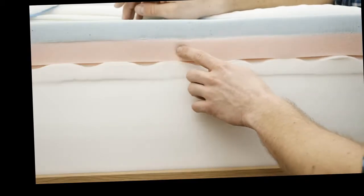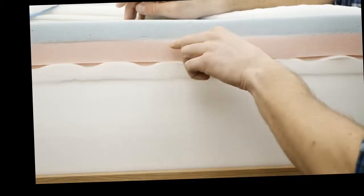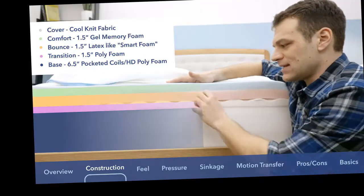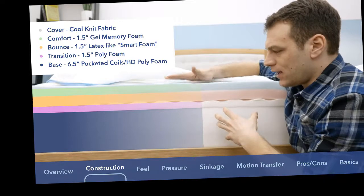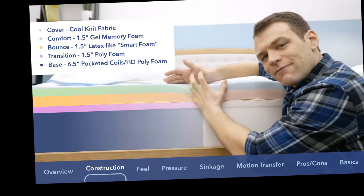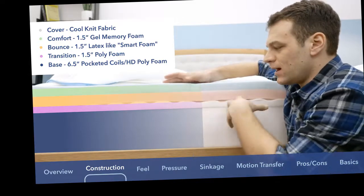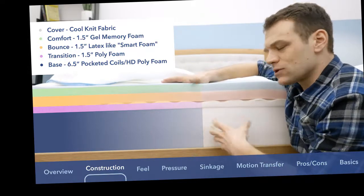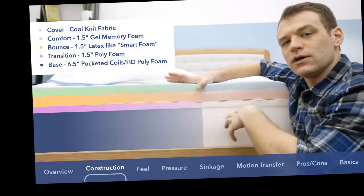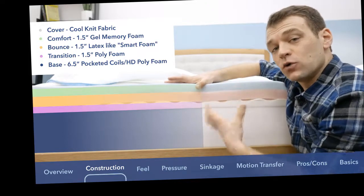Below that, we have the bounce or transition layer. It's a latex-like polyfoam. It's latex-like because it has really good bounce to it. It's not super firm, and it still allows you to sink further into the mattress for pressure relief, but it helps defend against the stuck feeling with a bit more bounce. Also, latex-like foams and latex foams are really good at dissipating body heat. They're good for cooling.